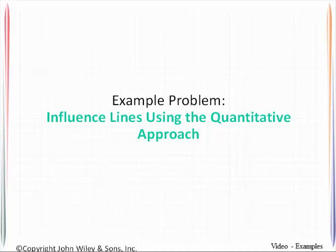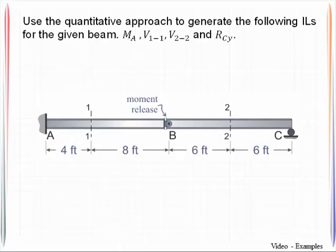In this example, you will learn how to construct influence lines for a beam. We will be using the quantitative approach, and we will be examining this particular beam. We are being asked specifically to generate four influence lines: one involves the moment at A, one involves the internal shear at section 1-1, one involves the internal shear at section 2-2, and also for the reaction at C. The quantitative approach involves placing unit loads at key locations along the length of the beam.